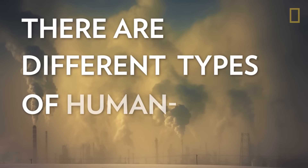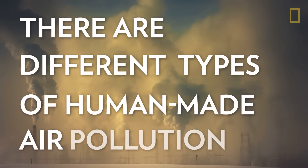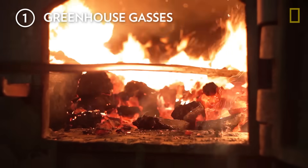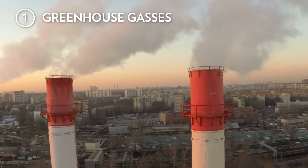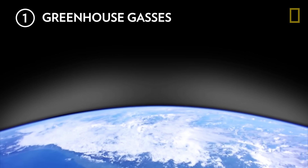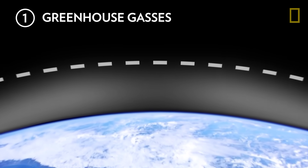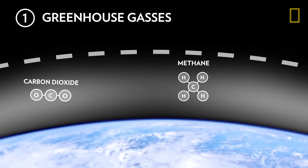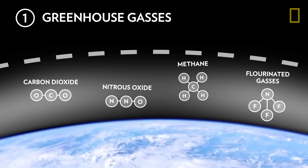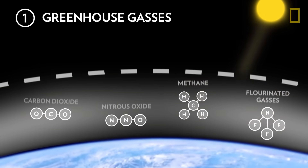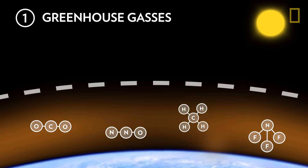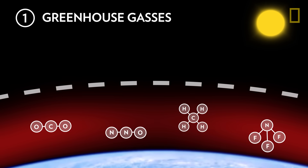There are different types of human-made air pollution. When we burn fossil fuels to produce energy, they release greenhouse gases into the air. These emissions, such as carbon dioxide, methane, nitrous oxide, and fluorinated gases, trap heat from the sun in Earth's atmosphere, leading to a rise in global temperatures.